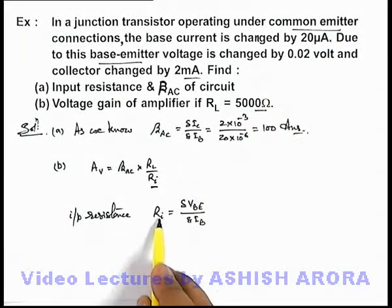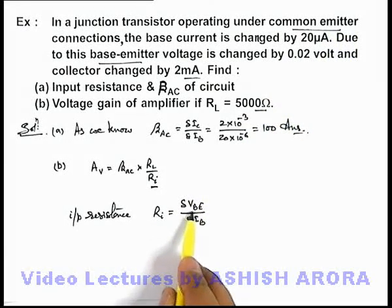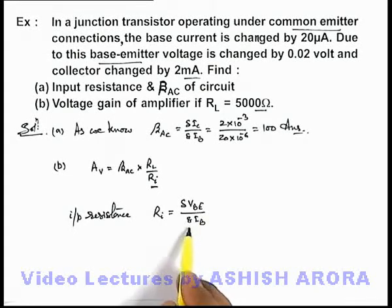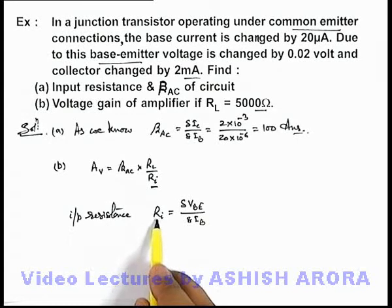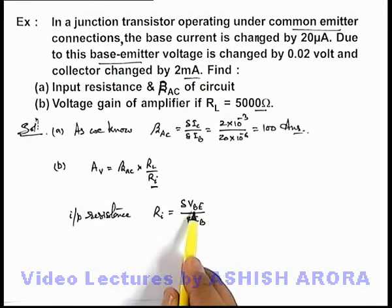We can write that input is across the base-emitter junction and input current is taken as base current. So dynamic resistance can be written as ratio of variation in input current.